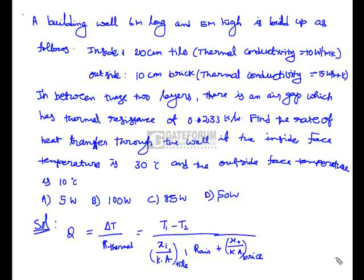By substituting all values, the overall heat transfer comes out to 85.5W. The surface area of the wall is 6×5 = 30 m². Thermal conductivity of tile is 10 W/mK, thermal conductivity of brick is 15 W/mK, and thermal resistance of the air gap is 0.233 K/W.